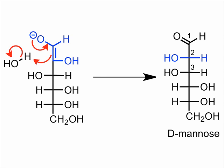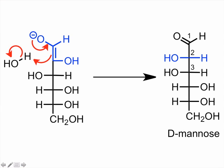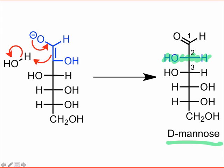First, let's imagine re-delivery of the proton to carbon-2, but on the opposite face from which it was taken. In essence, we've altered the configuration of C2 without doing anything else to the rest of the molecule. This epimerization process gives mannose as a final product.